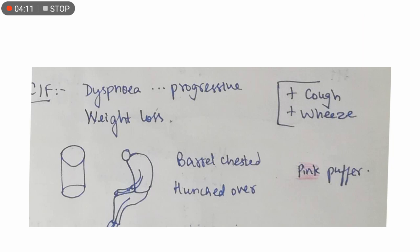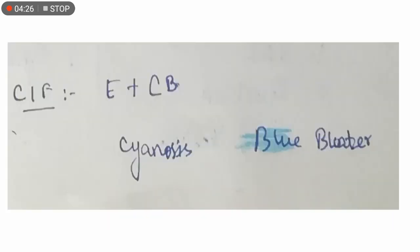Clinical features include dyspnea, which is progressive in nature, and weight loss. Cough and wheeze also occur, especially if it is asthmatic type. The chest becomes barrel-shaped and the person has a hunched back. They are called a pink puffer because oxygenation is not a problem at all.